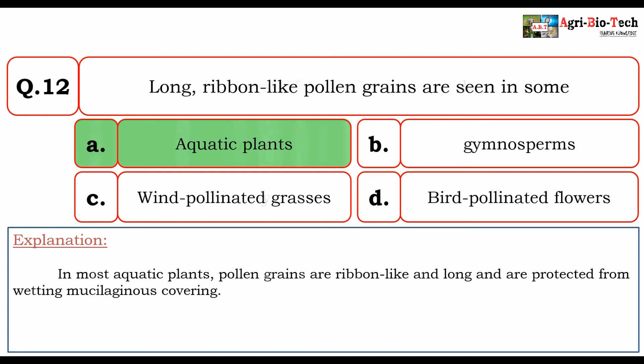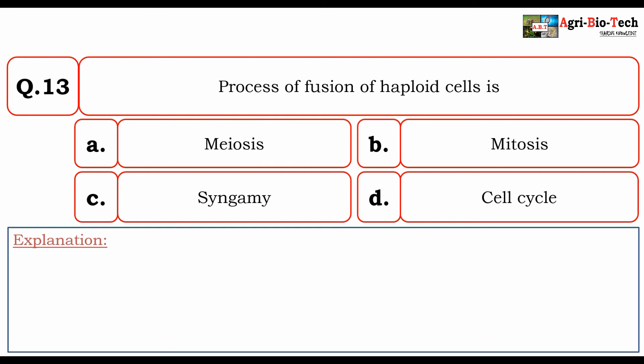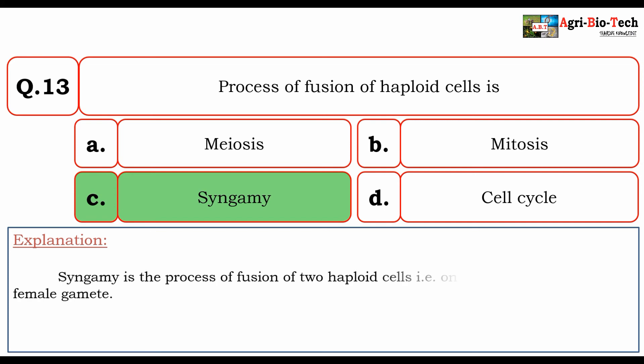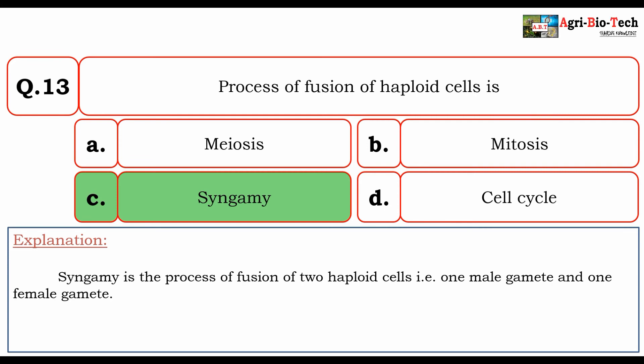Next question: the process of fusion of haploid cells is — meiosis, mitosis, syngamy, or cell cycle? The correct option is C: syngamy. Syngamy is the process of fusion of two haploid cells — one male gamete and one female gamete.